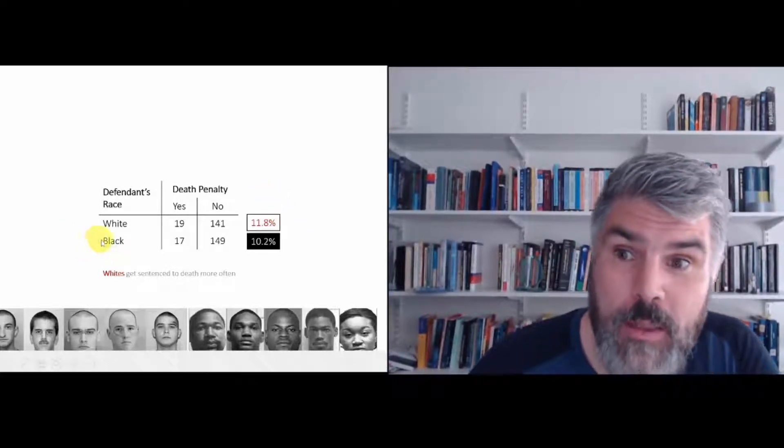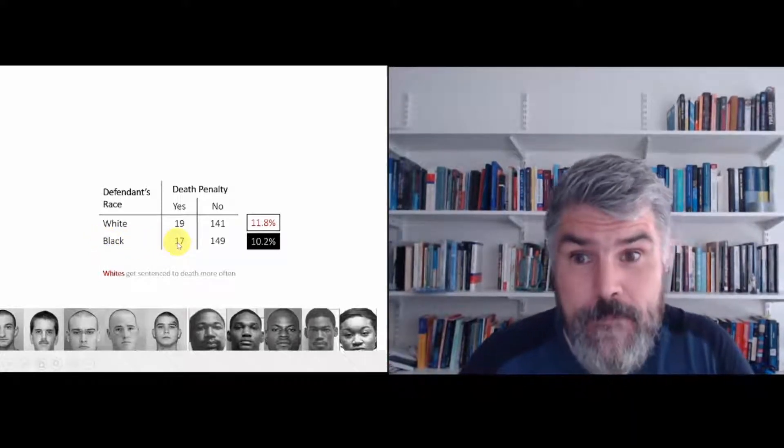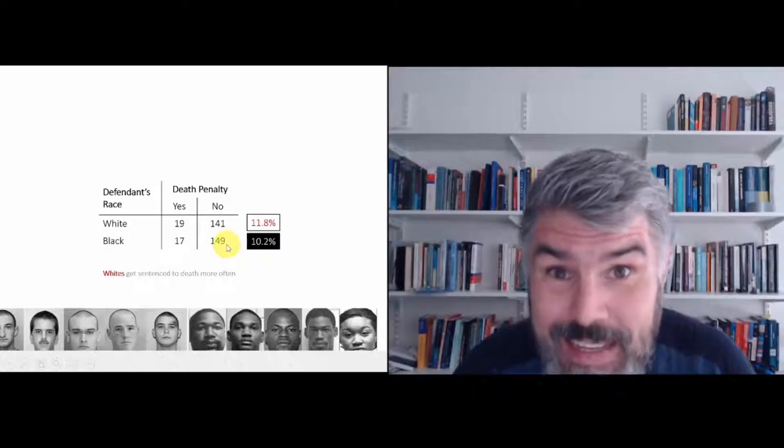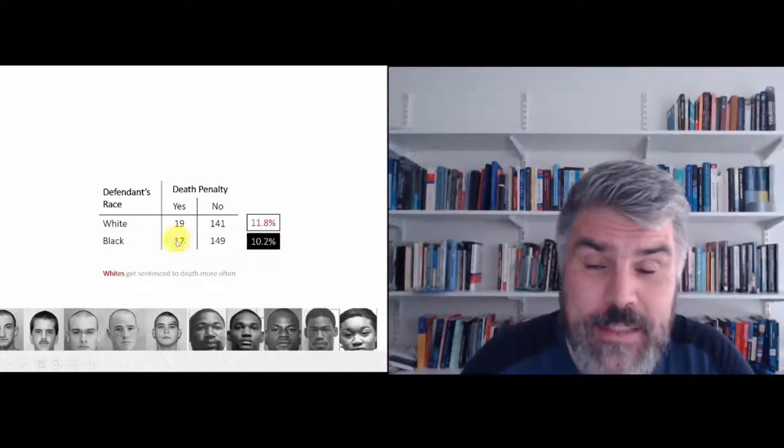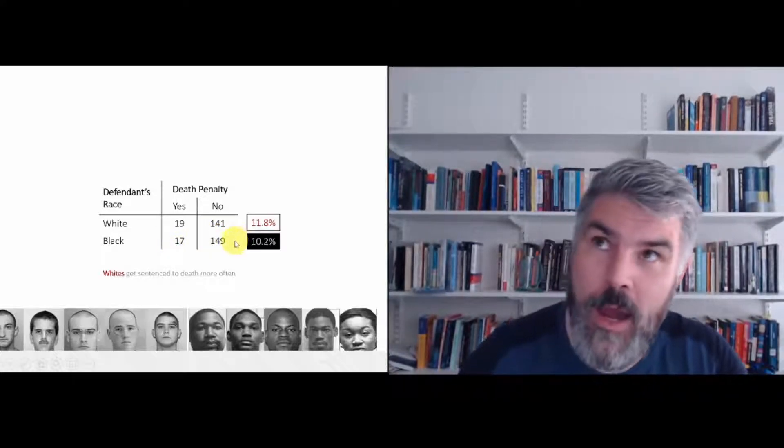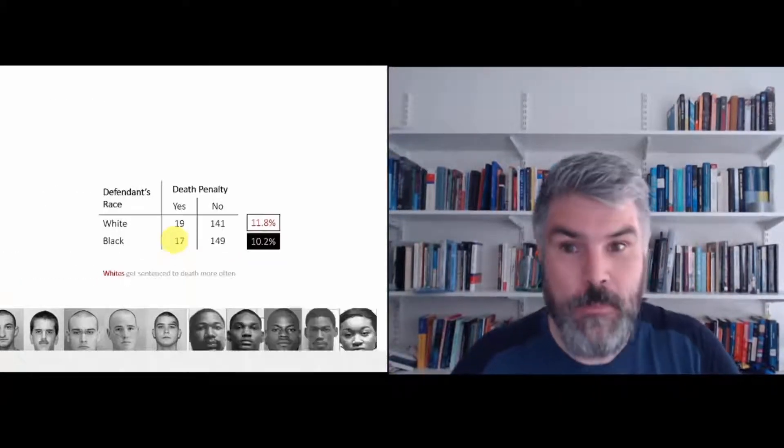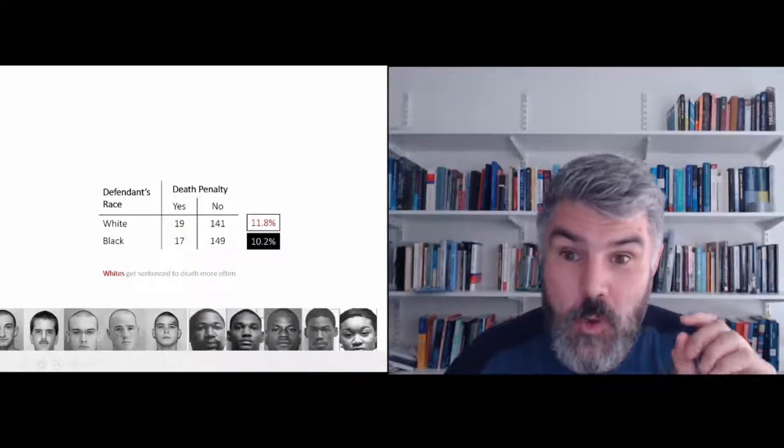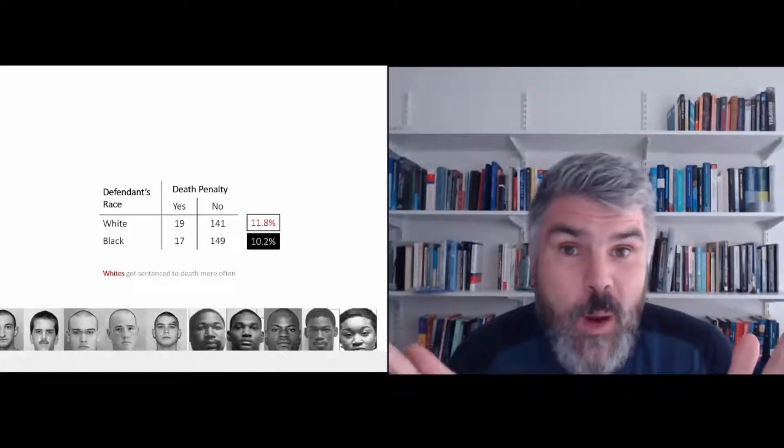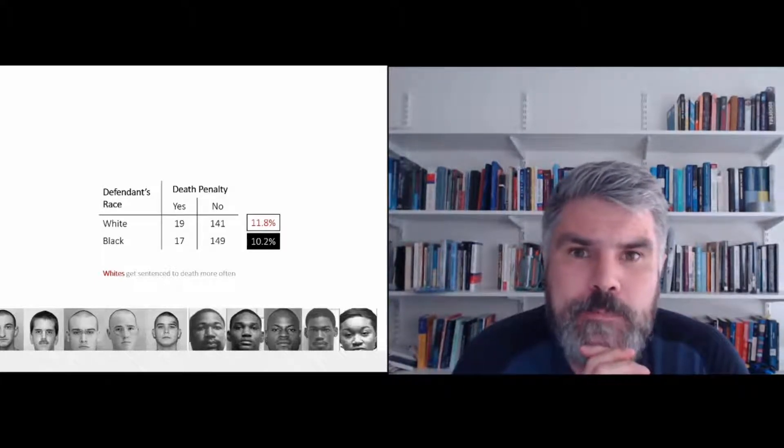Let's do the same thing for the blacks. So 17 received the death penalty, and 149 did not receive the death penalty. So the percentage of how many blacks did get the death penalty: 17 divided by 149 plus 17, which is 17 divided by 166. And that is 10.2%. So when we just compare these two percentages with each other, it looks like white offenders get sentenced to death more often than black murderers.